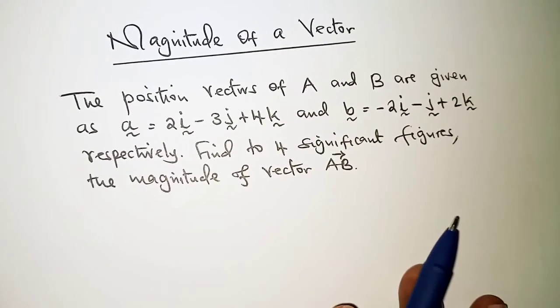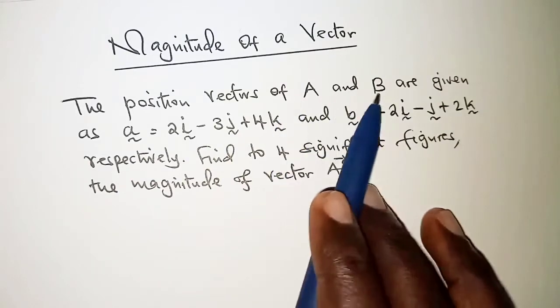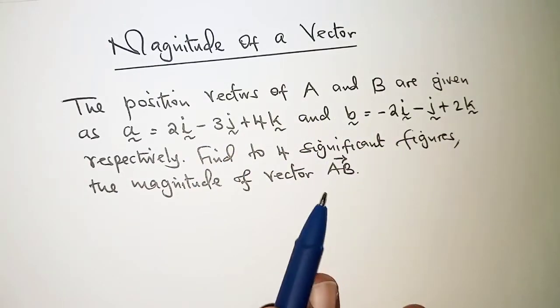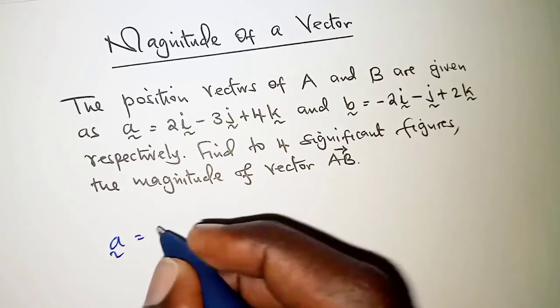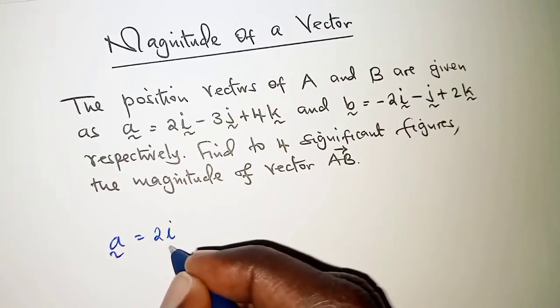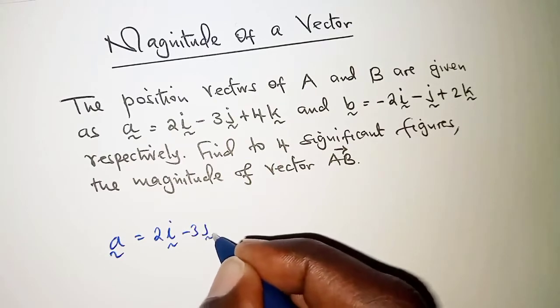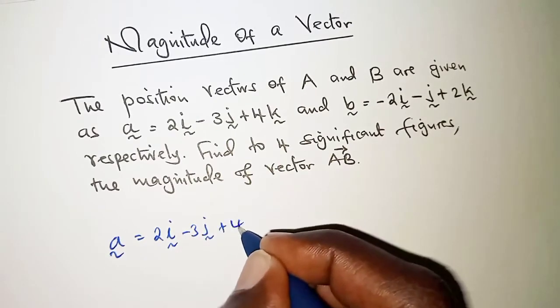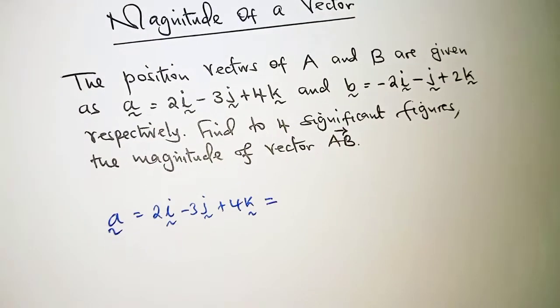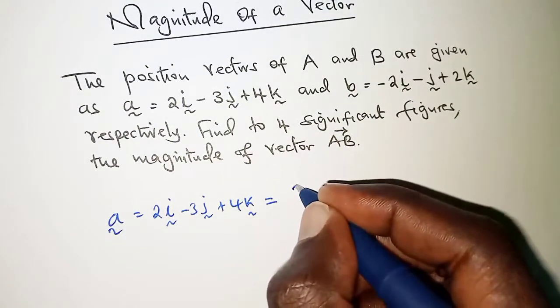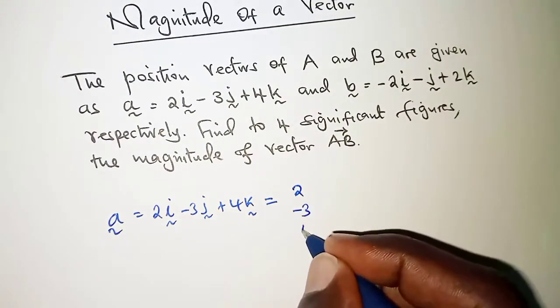First, we are told that the position vectors of A and B are as shown. We have A = 2i - 3j + 4k. Now we need to note that we can also write these as column vectors, which will be (2, -3, 4).